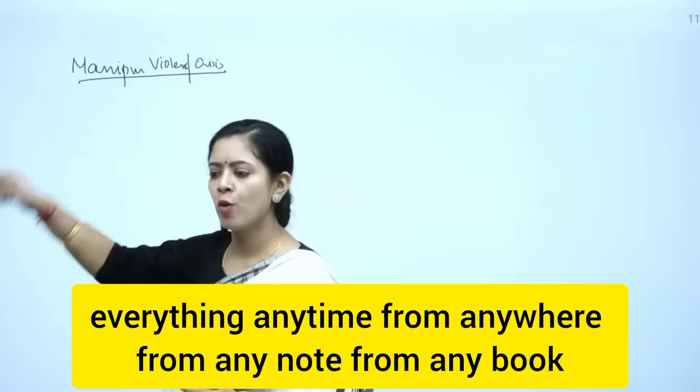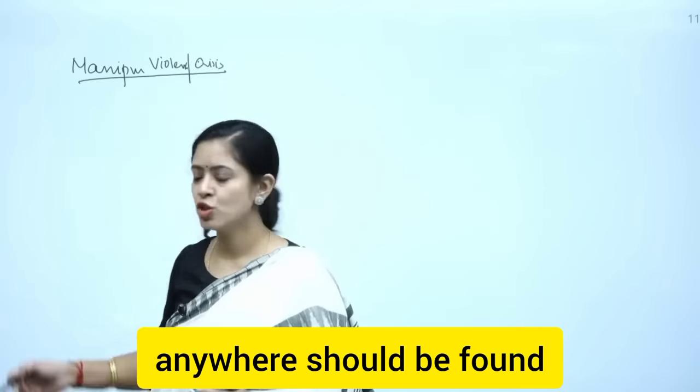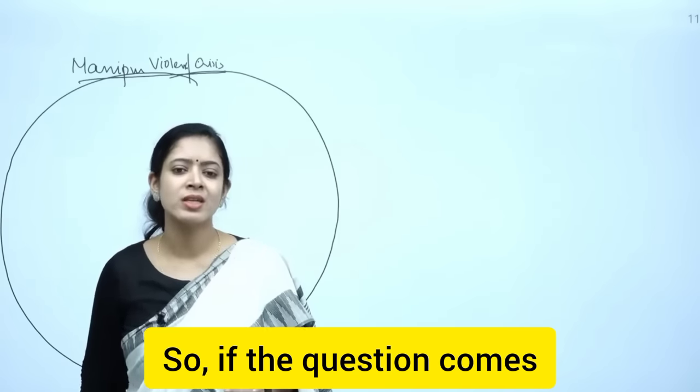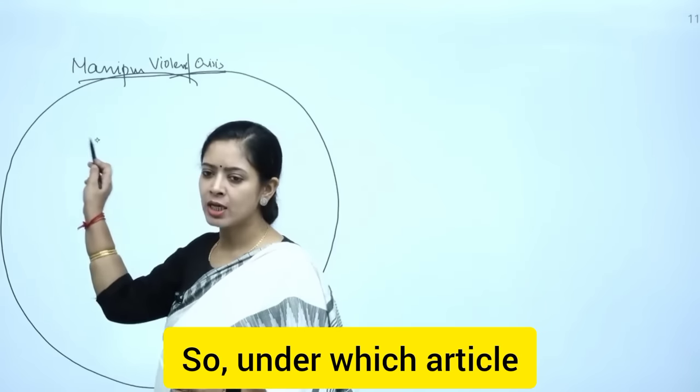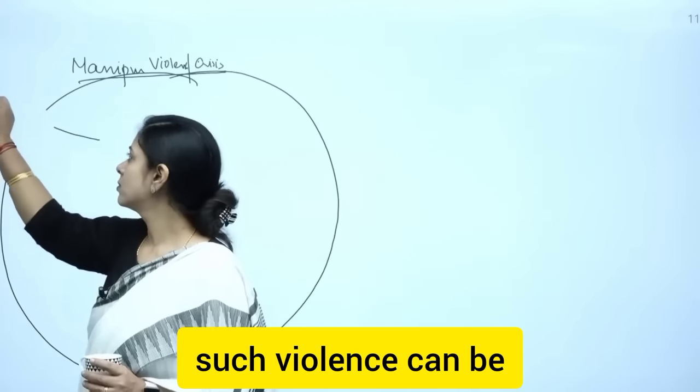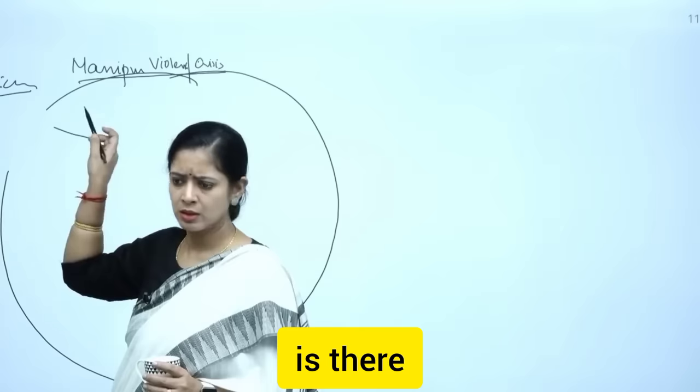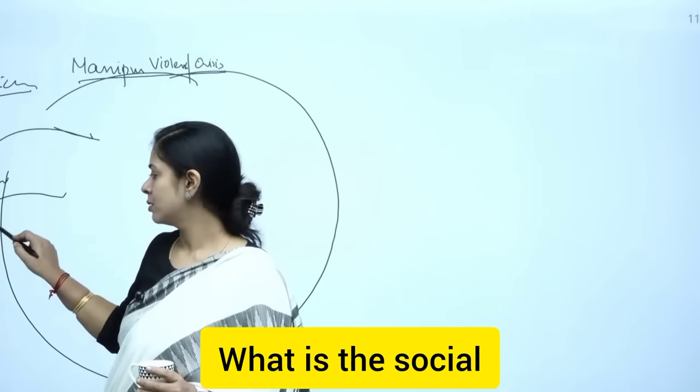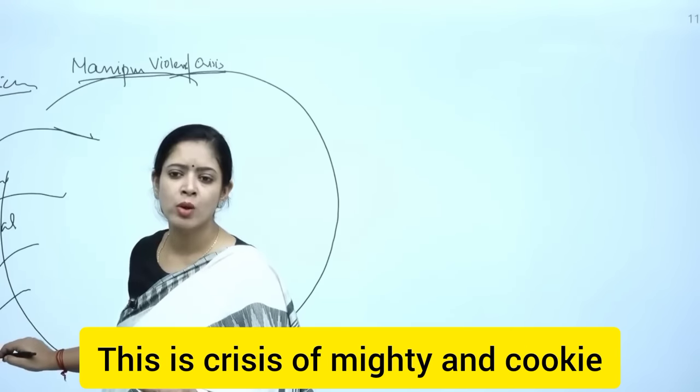Everything, anytime, from anywhere, from any note, from any book, anywhere, should be found here. So if the question comes, you will be better able to put it. Under which article can such violence be controlled by the center? Is there some means? What is the responsibility of state government? What is the social dimension of it? What is the economical dimension of it?